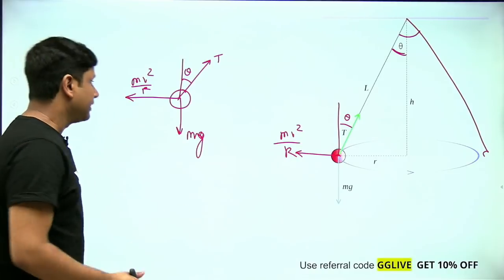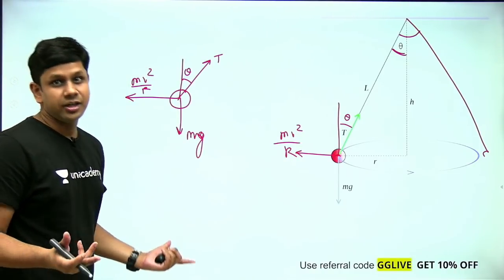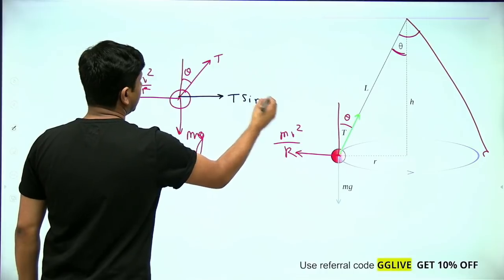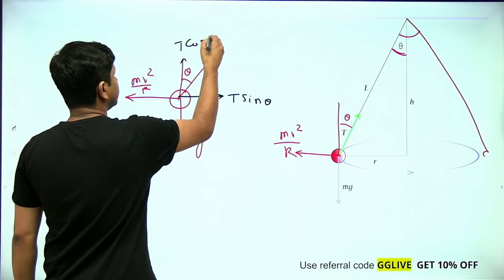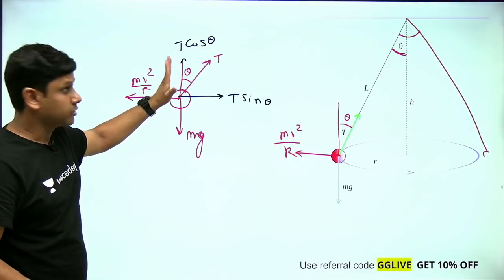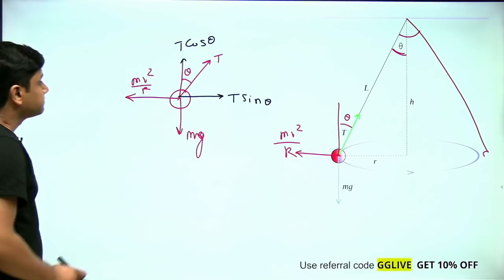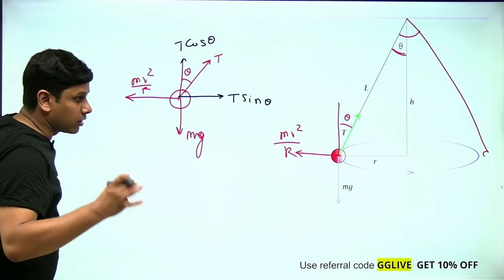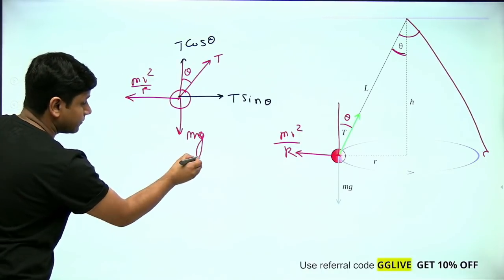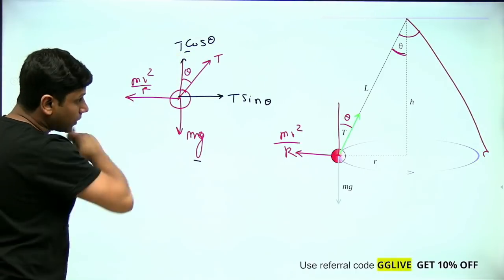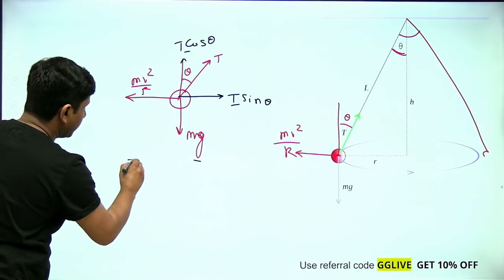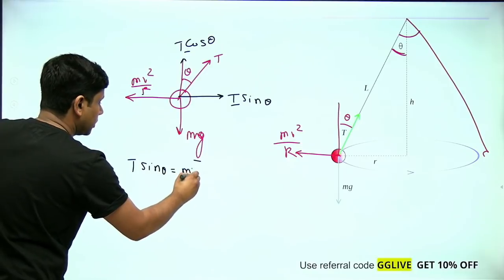To solve it, take the components of tension: the vertical component is T cosθ and the horizontal component is T sinθ. Now balance forces: in the vertical direction, T cosθ = mg. In the horizontal direction, T sinθ = mv²/r.